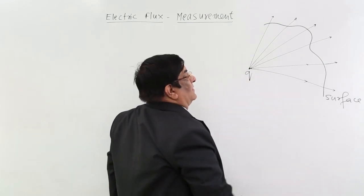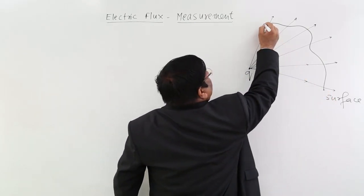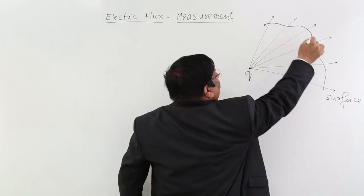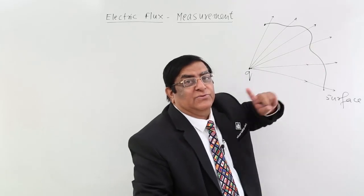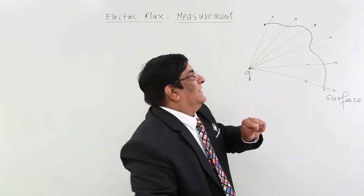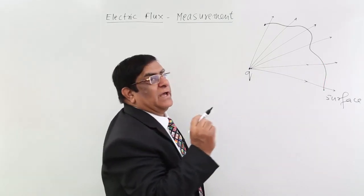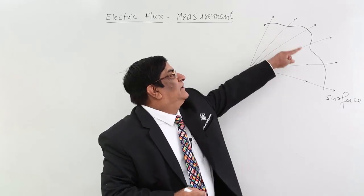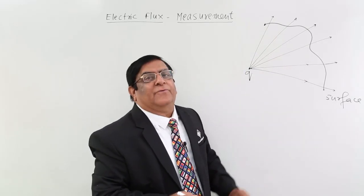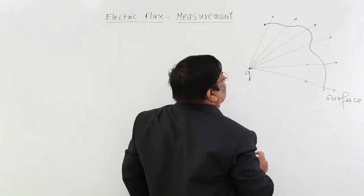Say from this point up to this point it is a surface and this electric field is getting linked. Remember the word link - this electric field is linked with this. We want to calculate how much is the flux which is linked with this area. For that our formula will be, see here, our formula will be like this.